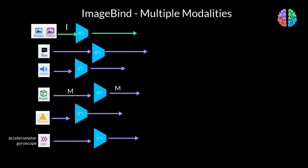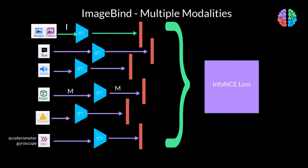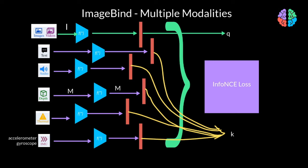The pre-processed inputs are then passed through the encoders, whose outputs are passed through a simple linear layer to ensure they are of the same dimension, before being trained with the InfoNCE loss. Let's say the output of the image or video embedding is Q and the output from any other modality is K. With that, let's look at what's going on inside the InfoNCE loss function.